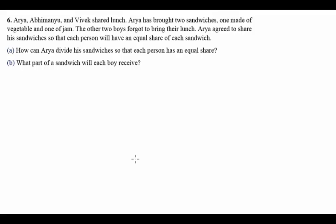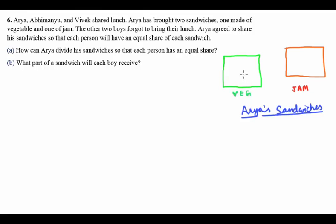Question six: Aria, Abhimanyu, and Vivek shared lunch. Aria brought two sandwiches — one made of vegetable and one of jam. The other two boys forgot to bring lunch. Aria agreed to share his sandwiches so that each person will have an equal share of each sandwich. Aria brought one veg sandwich and one jam sandwich.